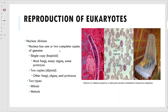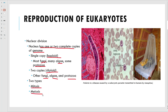Reproduction and nuclear division: one or two complete copies of the genome per chromosome. A single copy would be haploid - these would be like the fungi, some of the algae, and the protozoa. Two copies, diploid, like ours - again fungi, algae, and protozoa, depending on the species. These guys can go through mitosis and they can go through meiosis.